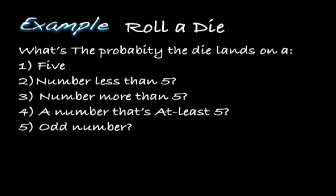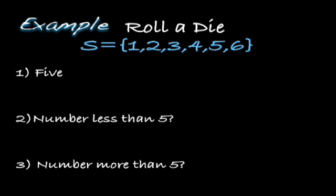When you roll a die, we consider several questions: what's the probability the die lands on a specific number, a number less than a given value, a number more than a given value, and a number that's at least a given value. There are six outcomes possible when you roll a die.